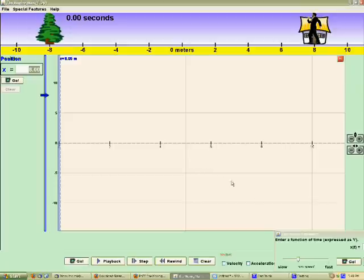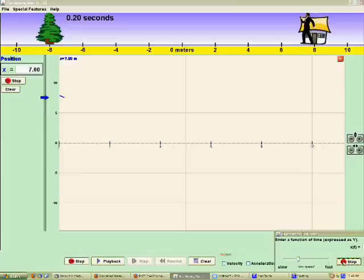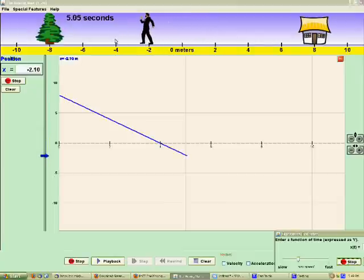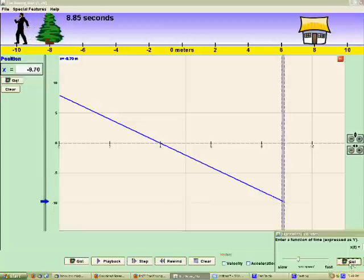So let's see how the moving man moves on this position versus time graph. I see that he started at 8 and that he's moving in a negative direction at a constant pace. I don't really know how fast he's moving, but let's stop the simulation and see if you can figure that out.